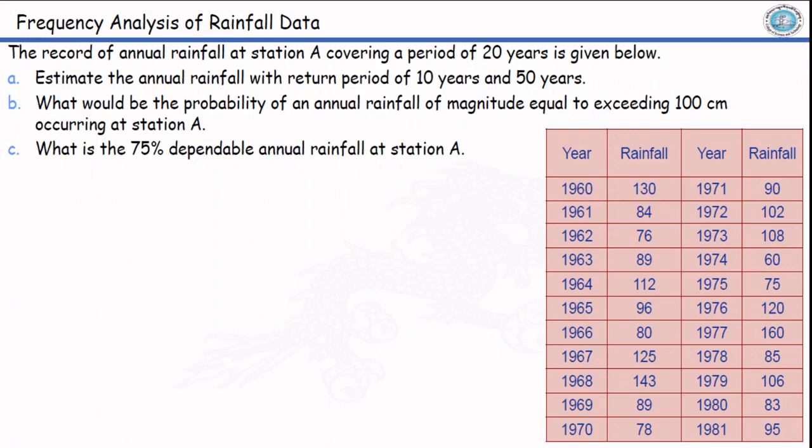The record of annual rainfall at station A covering a period of 20 years is given below. Estimate the annual rainfall with return period of 10 years and 50 years. What would be the probability of an annual rainfall of magnitude equal to or exceeding 100 centimeter occurring at station A? What is 75 percent dependable annual rainfall at station A? We will be using frequency analysis to answer these questions.